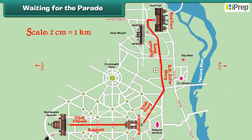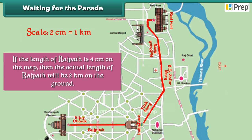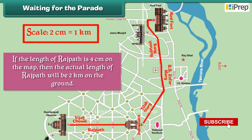Aashi, see here — if the length of Rajpath is 4 cm on the map, then the actual length of Rajpath will be 2 km on the ground.